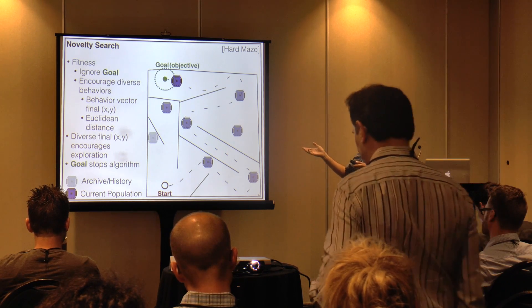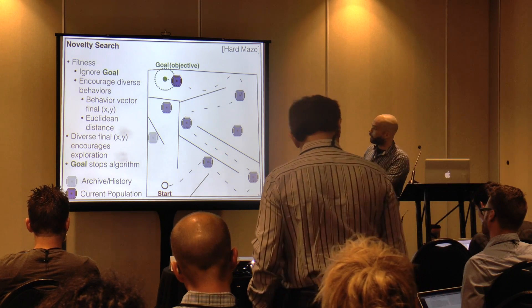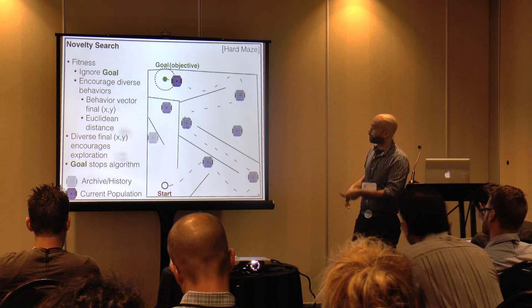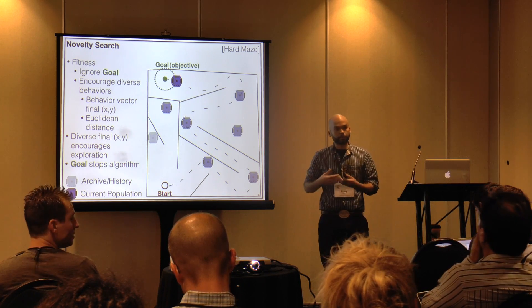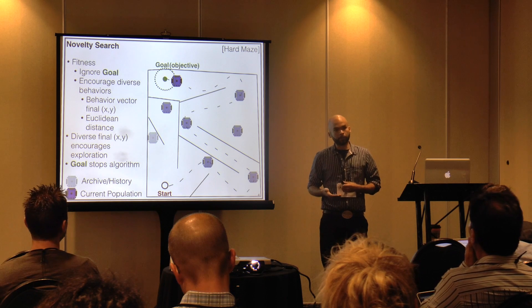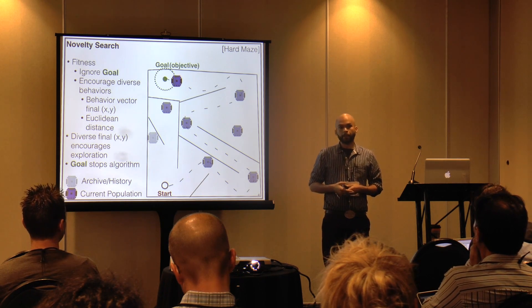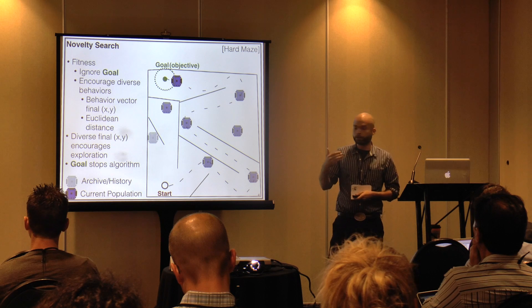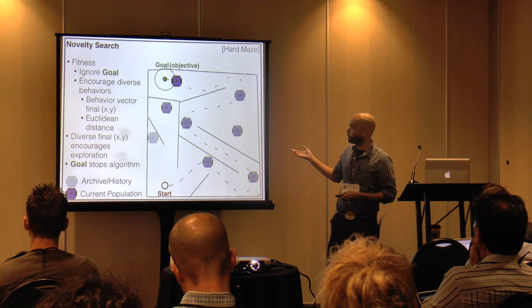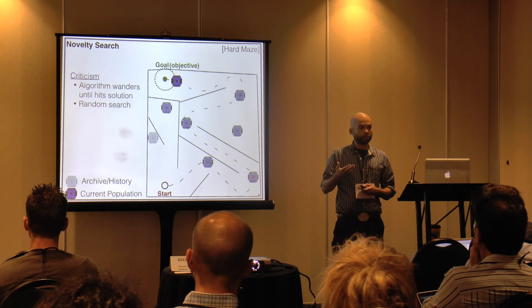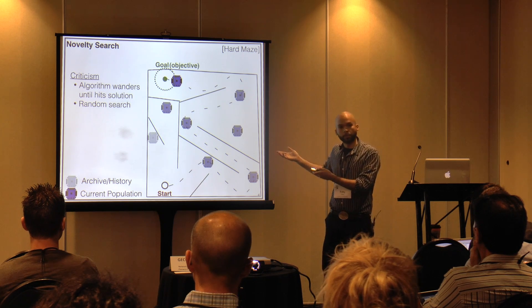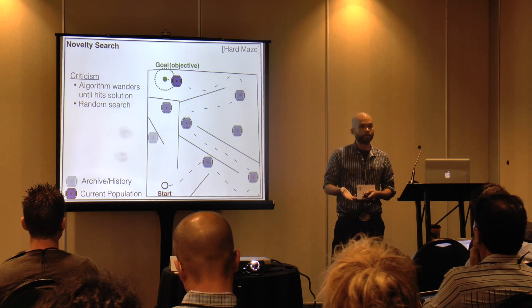Lo and behold, we find that goal solution, avoiding local optima. As you can see, this is a very powerful algorithm, and many experiments have shown that. But if you weren't familiar with Knowledge Research, it may seem as though it is simply wandering around the environment until it crosses the goal — it seems very random.